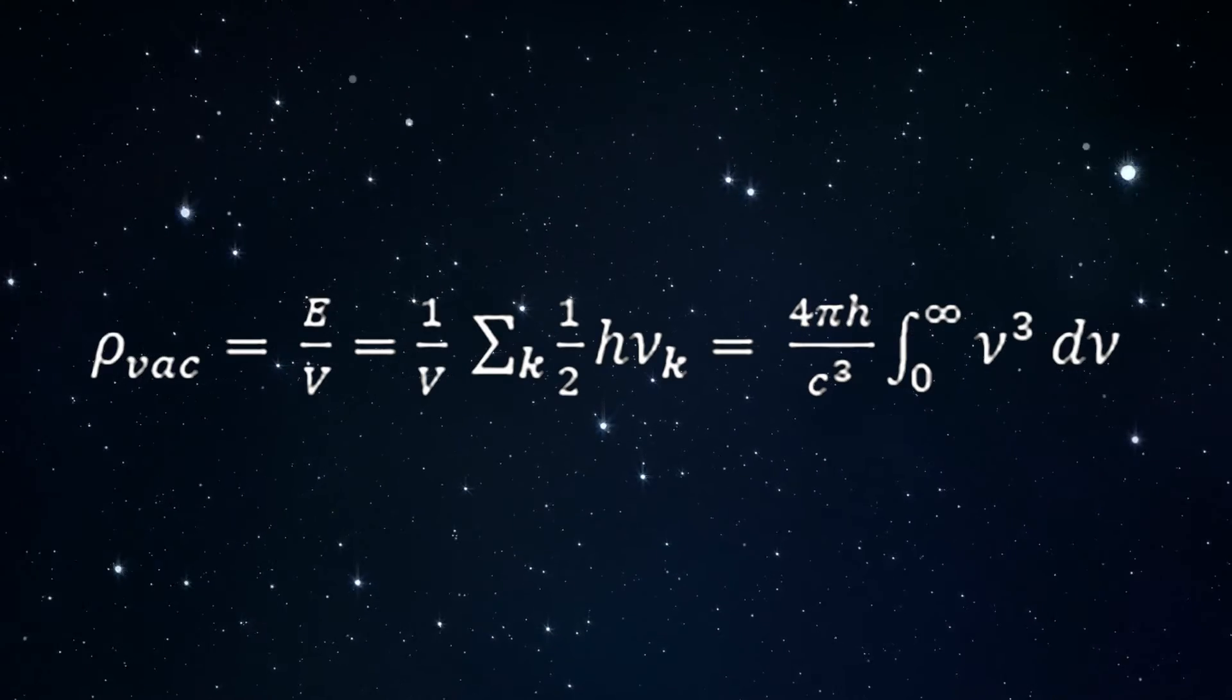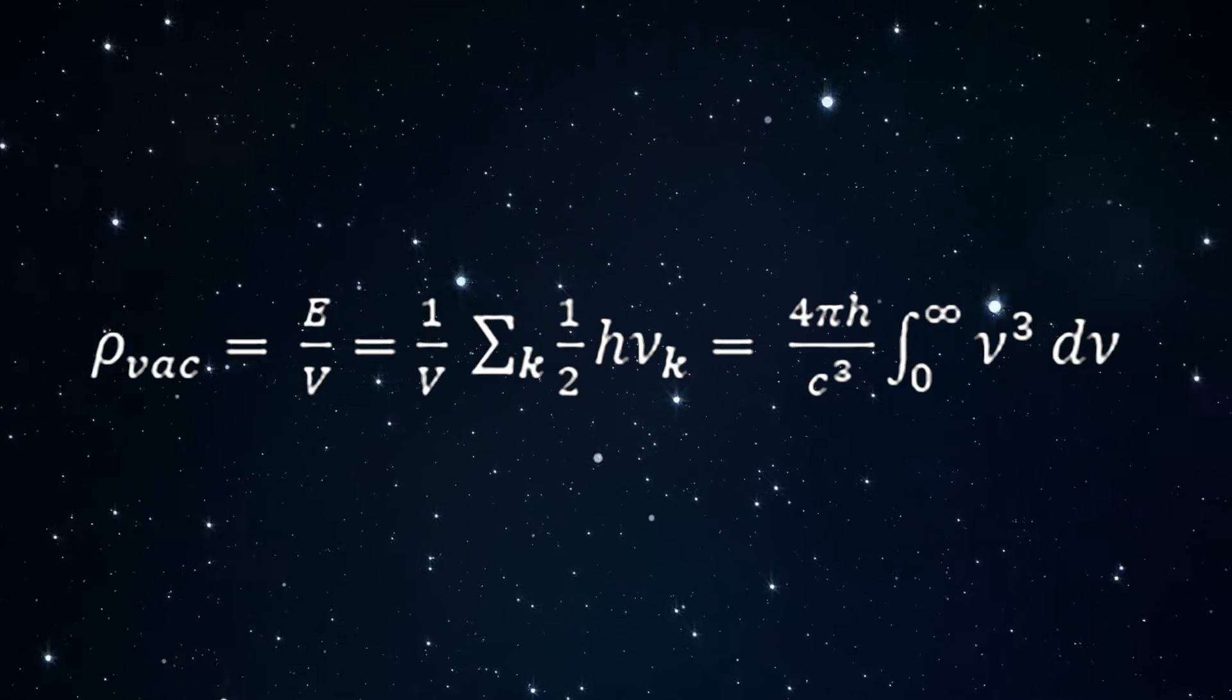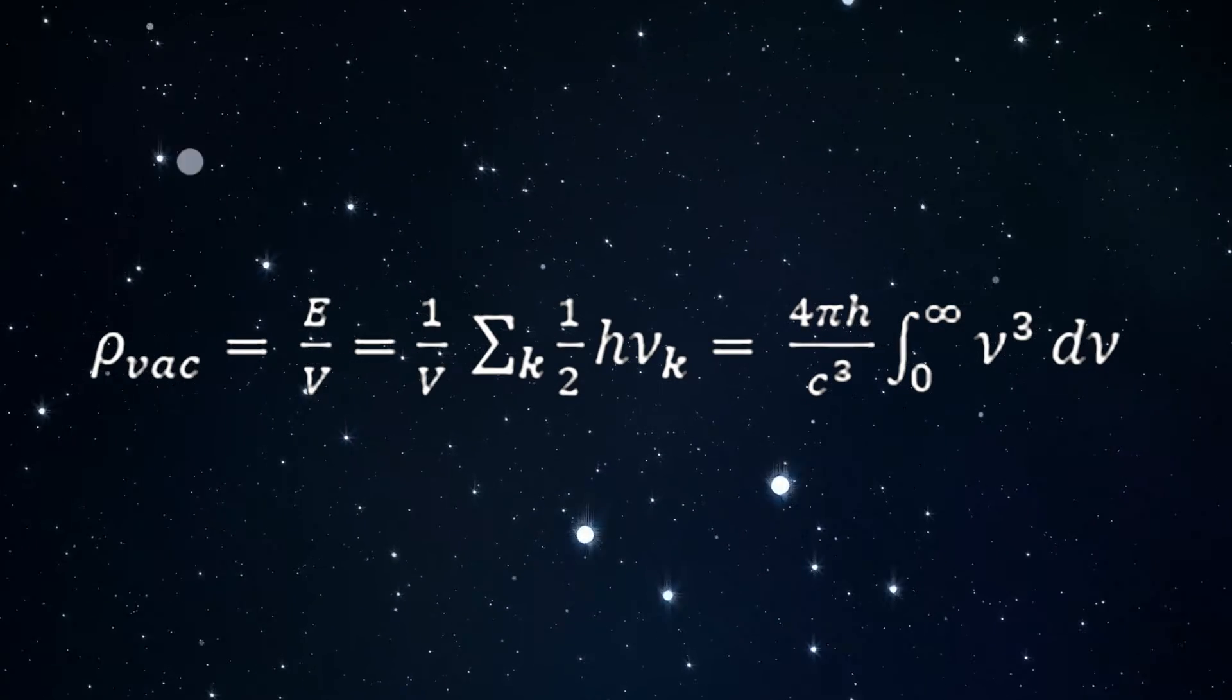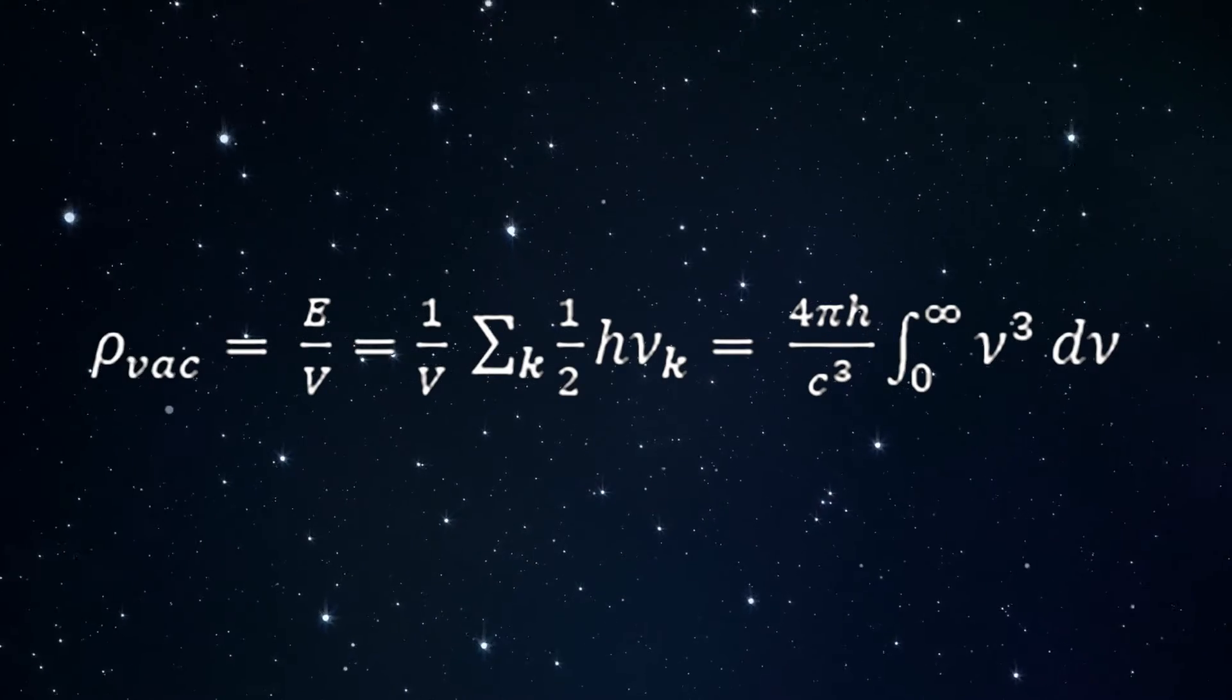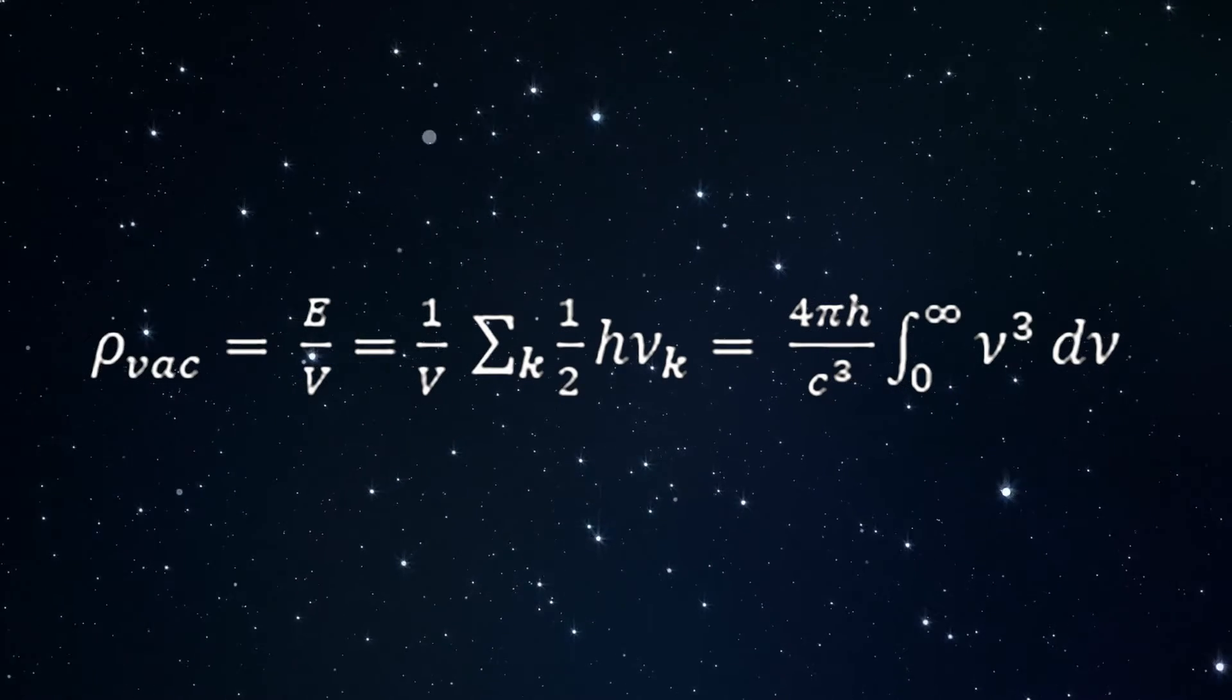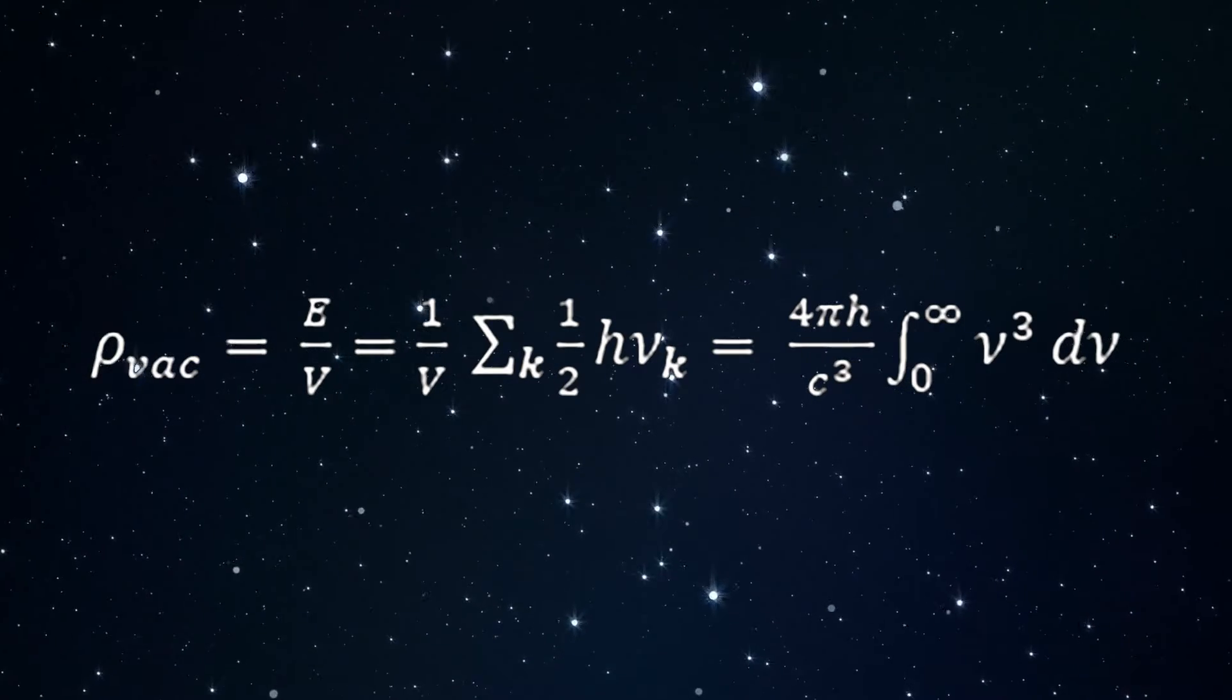We can remove the infinity by replacing the upper limit of the integral by a cut-off frequency set by the Planck scale, but this still results in a huge vacuum energy by 120 orders of magnitude.